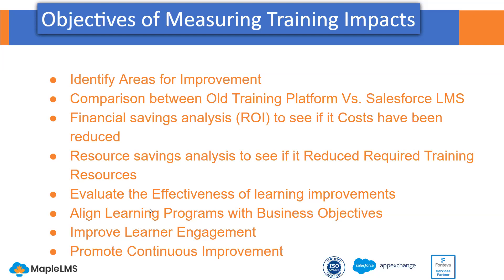One of the objectives should be to align your learning programs with your business objectives. Depending on the type of organization, there could be a variety of business objectives — for employees it could be employee growth or education, for associations or other organizations it could be member training. You need to make sure that your learning programs are aligned with your business objectives, and not just focused on users' knowledge or skill development, but also aimed at business objectives.